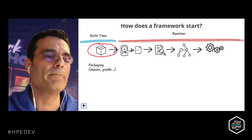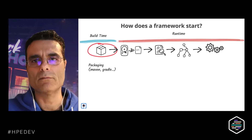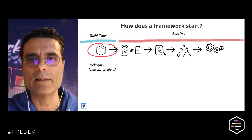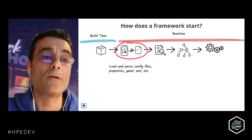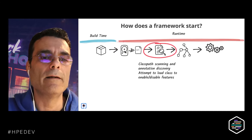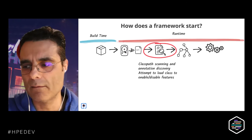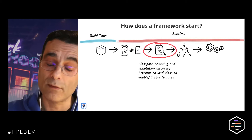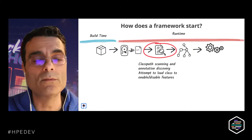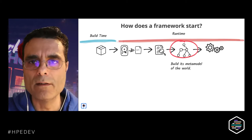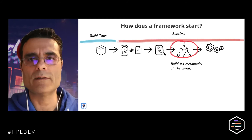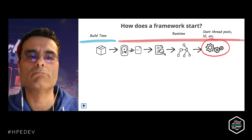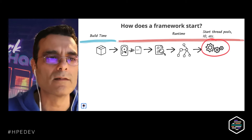If you take a typical medium complexity framework like Hibernate: you compile your application, get jar files — that's the build time phase. Then at runtime, Hibernate has to load configuration from config files, properties, YAML, XML — needing parsers in memory. It does a lot of class path scanning, which is one of the most expensive operations in Java, trying to find annotations and see what the user wants to do, building a meta model in memory.